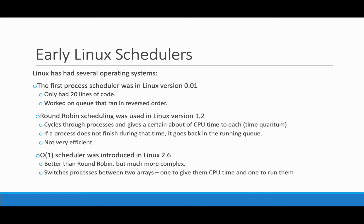Linux version 1.2 uses round-robin scheduling, basically cycling through processes and giving each process a short burst of CPU time. If the process doesn't finish during its CPU time, it just goes back into the running queue. That's a very oversimplified view of round-robin scheduling, but what's important is that it's not that efficient and was replaced.